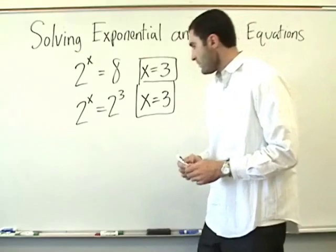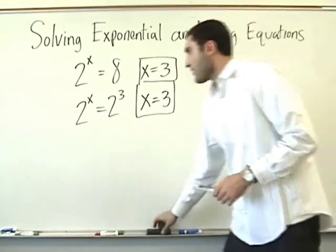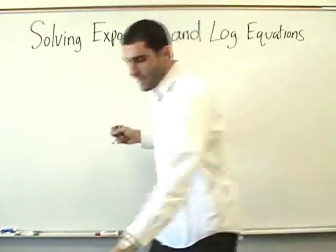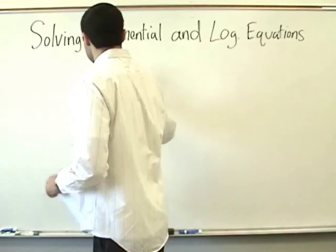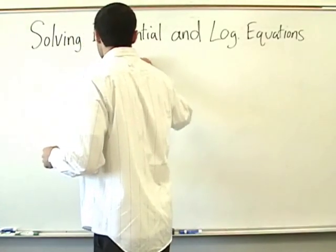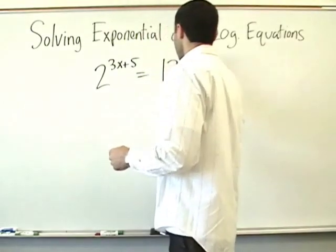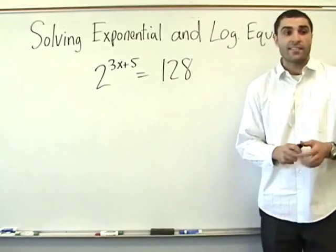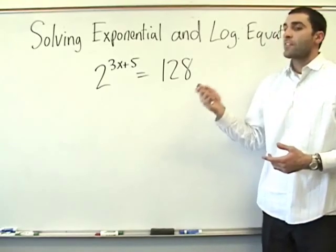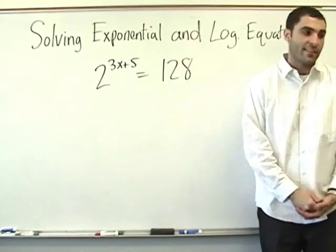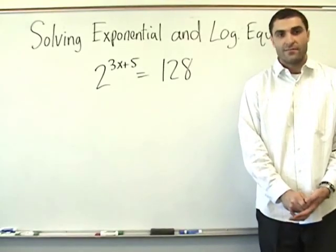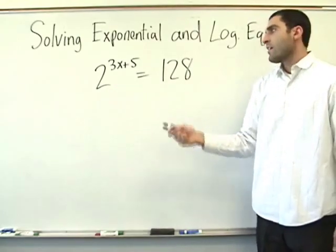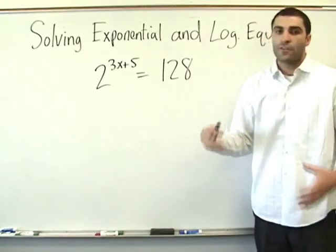Okay. Let's erase this one and focus on one at a time. We've got 2 to the 3x plus 5 equals 128. It's not as clear this time. The solution is: create the same base. Any guesses of what that base is going to be? 2. This one already has 2, and when you work with exponents enough, you know that you can create 128 as a power of 2 to the something.